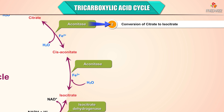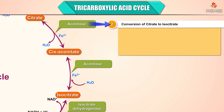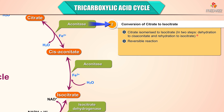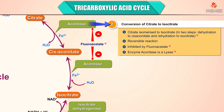Step 2 is the conversion of citrate to isocitrate. Citrate is isomerized to isocitrate in two steps: dehydration to cis-aconitate, then rehydration to isocitrate. It is a reversible reaction inhibited by fluoroacetate. The enzyme aconitase is a lyase.